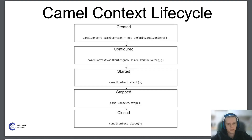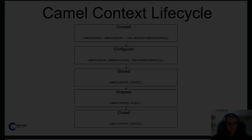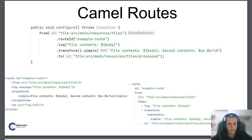For now this is all we need to know about CamelContext. Just remember that CamelContext is a runtime that makes Camel work, and that it should be created, configured, started, stopped, and then closed. Now let's take a look at Camel routes. Camel routes are definitions of our integrations — they specify how data is transferred from one system to another.